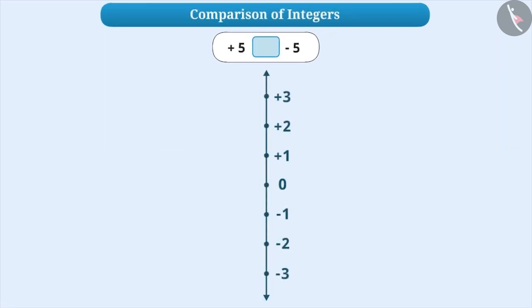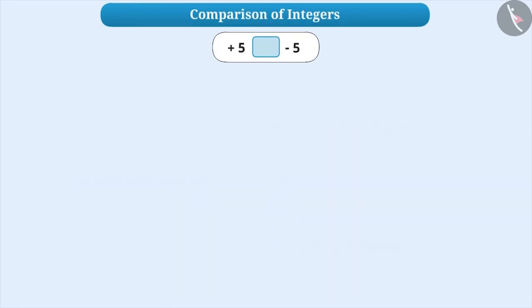Similarly, we can obtain a vertical number line as well, where positive integers are shown upwards and negative integers downwards. In this video, we are using only a horizontal number line.